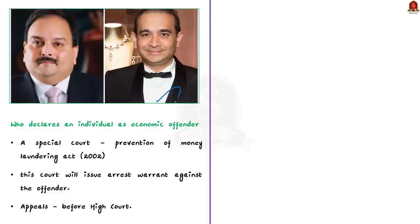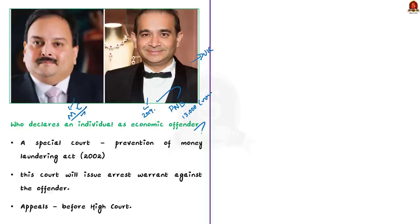For example, Nirav Modi, who is a diamond merchant, is accused of defrauding the Punjab National Bank of over 13,000 crores. He fled India in 2018 and is currently living in the United Kingdom. In 2019, he was declared a Fugitive Economic Offender under this act. Another diamond merchant named Mehul Choksi and former IPL chairman Lalit Modi were also listed as economic offenders under this act. A special court created under the provisions of the Prevention of Money Laundering Act 2002 will declare a person as a fugitive economic offender and issue an arrest warrant against the offender.